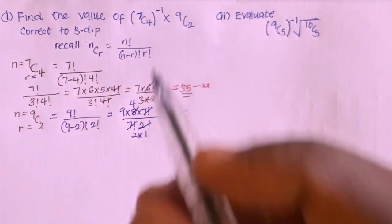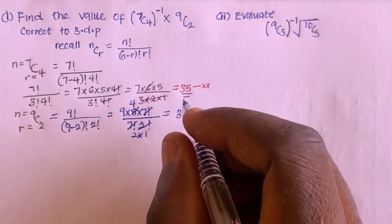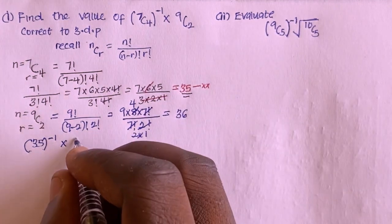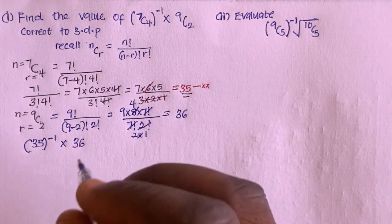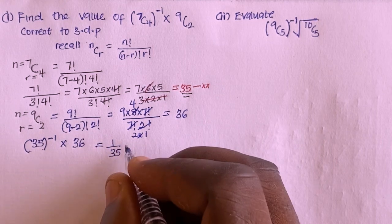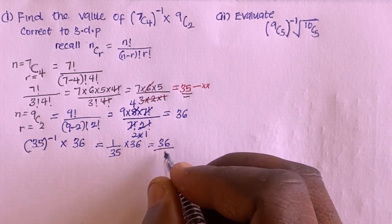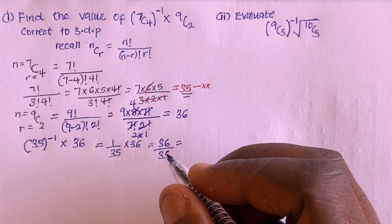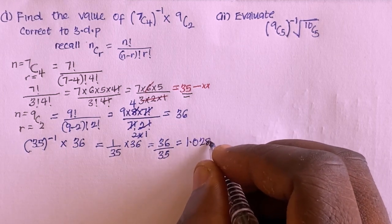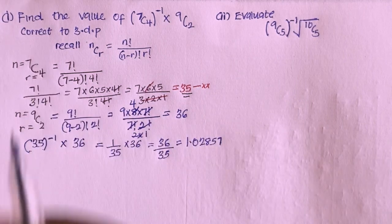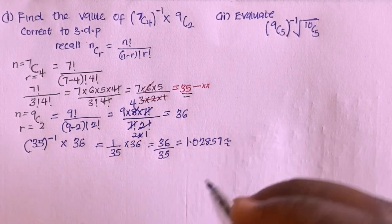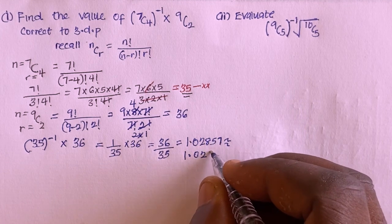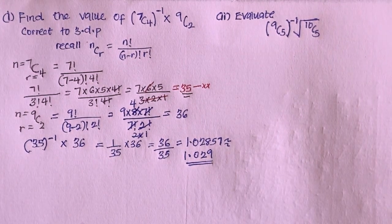Coming back to the full expression: 7C4 inverse times 9C2. Since 7C4 is 35, its inverse is 1 divided by 35. Multiplied by 36, this gives 36 divided by 35, which equals 1.02857. Correcting to 3 decimal places, the answer is 1.029.